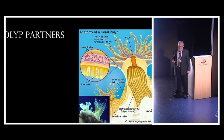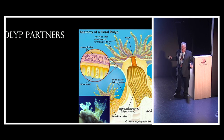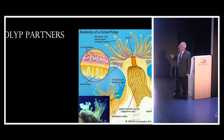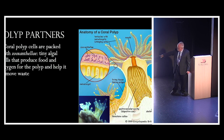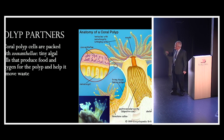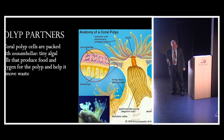Coral polyps aren't quite like that, though. They have the tentacles and the stinging cells — some of them can give you a fairly nasty burn — but that's not what they mainly depend on. What they depend on, as you can see in that lower picture, are all those little green dots in that transparent polyp: they are actually little algae.